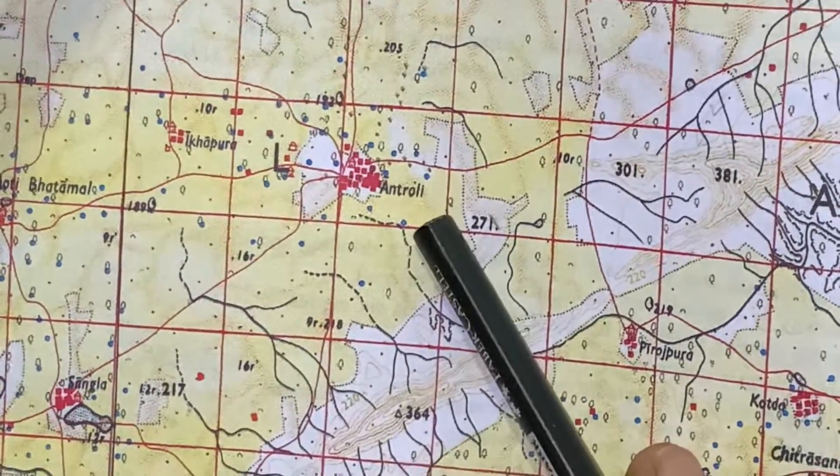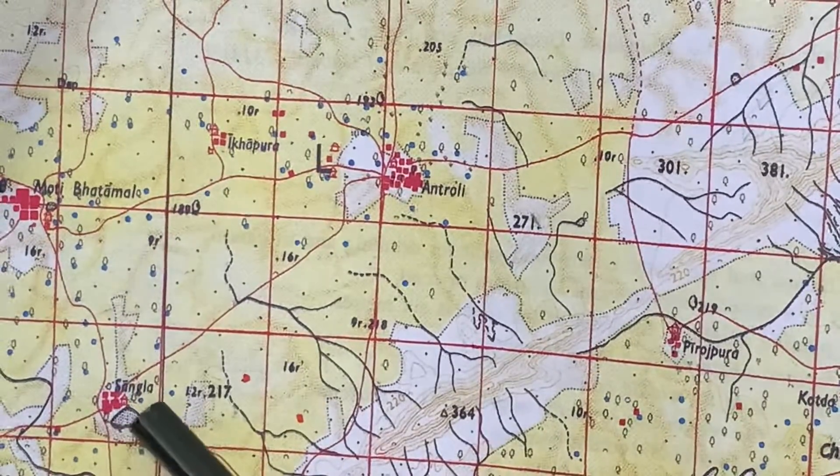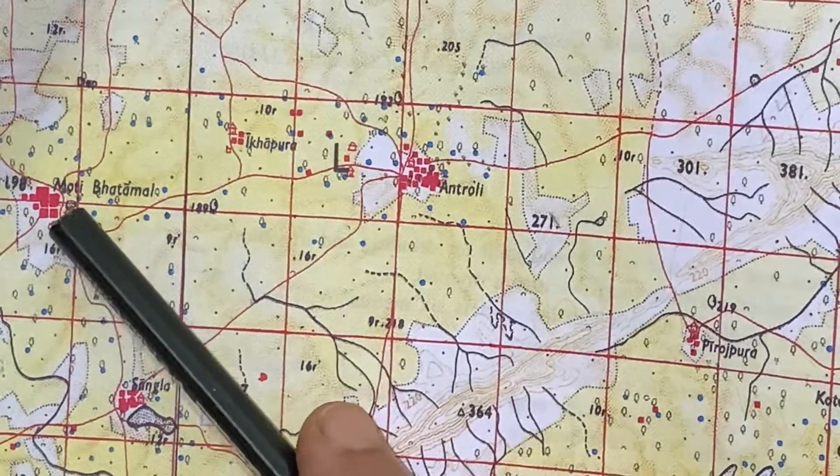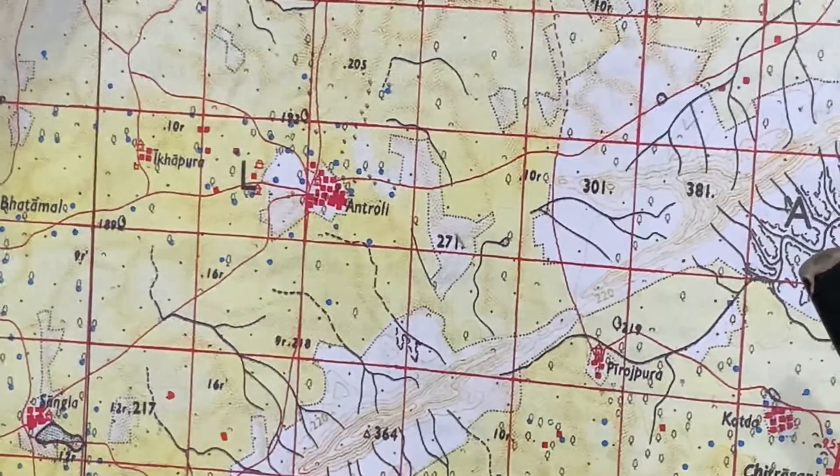And trolley is written here. All the houses are together. Here also, you can see Sangla, all the houses are together. Third one, you can see Bhatamal, all the houses. So, all the examples are of nucleated settlements.